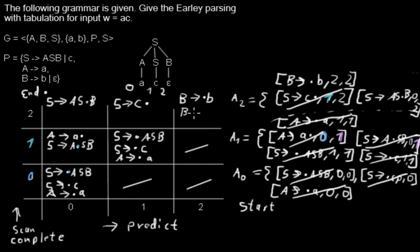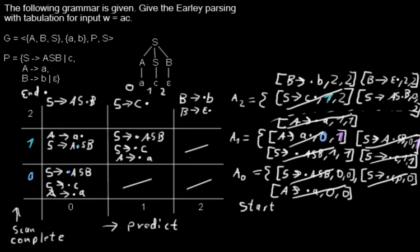The next B rule is B→ε, where ε is the empty string. It doesn't really matter if I write the dot before or after ε — I'll write it after so you can see it's a complete item. I add B→ε. starting at 2 ending at 2 to the agenda. For the B→.B item, the dot is in front of a terminal symbol, but there's no terminal B in the input string, so that scan step fails and I throw it out.